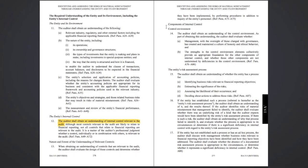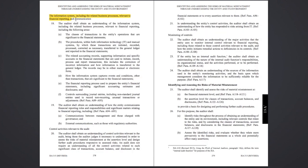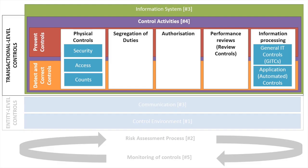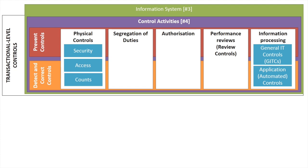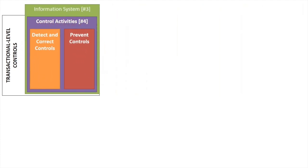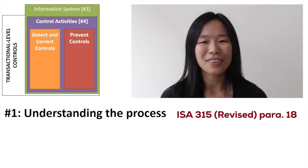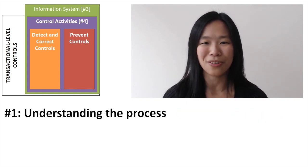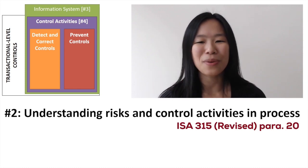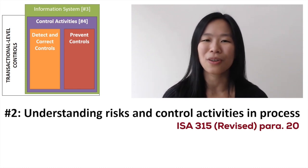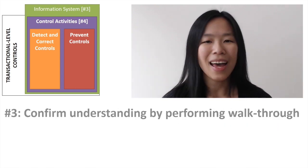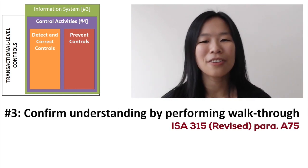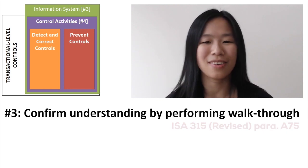Under ISA 315 revised, auditors have to obtain an understanding of all of these different components of an entity's internal control. But when we're specifically talking about understanding controls and performing walkthroughs, we're really talking about the transactional level and focusing on three things. One, understanding the process — ISA 315 revised requires us to do this for the business processes which are relevant to financial reporting. Two, understanding the risks in the process and the relevant control activities management have designed in response. And three, confirming your understanding from one and two by walking through one transaction.